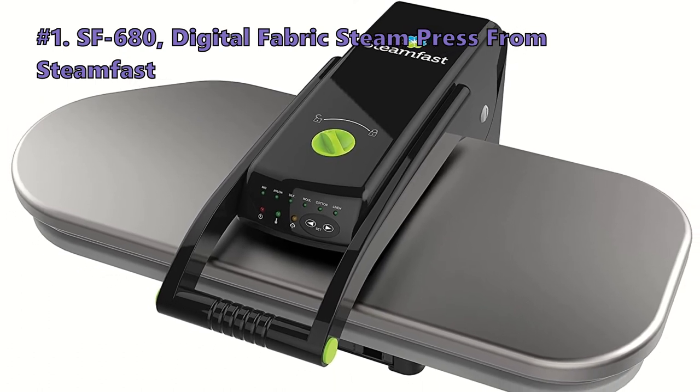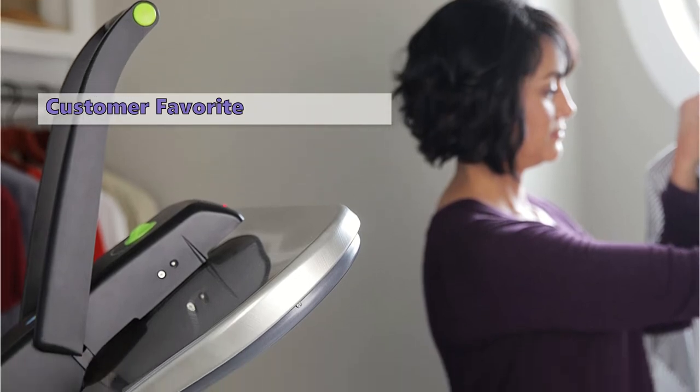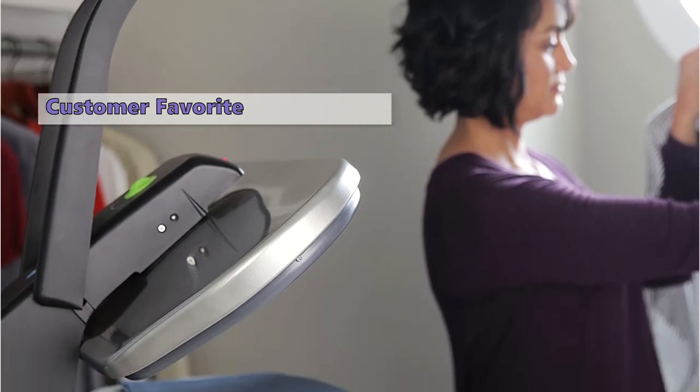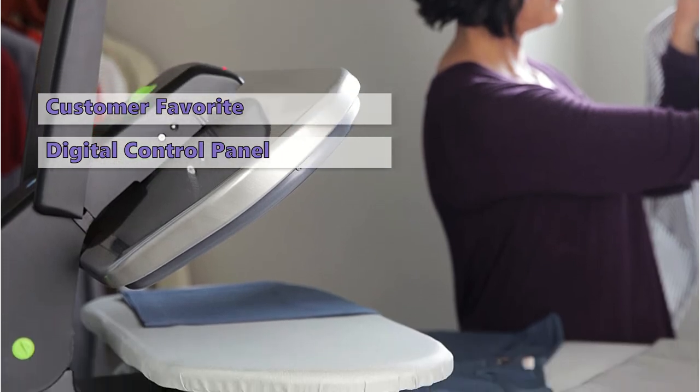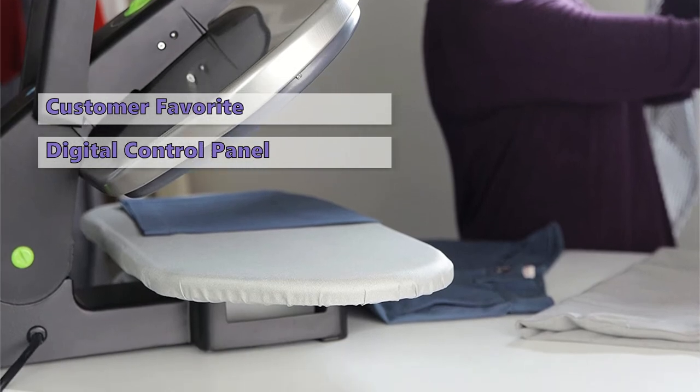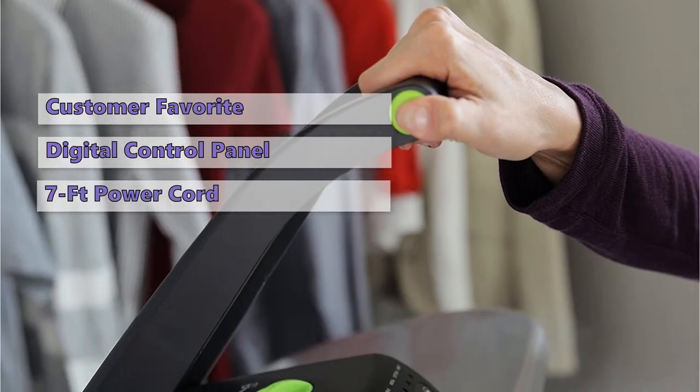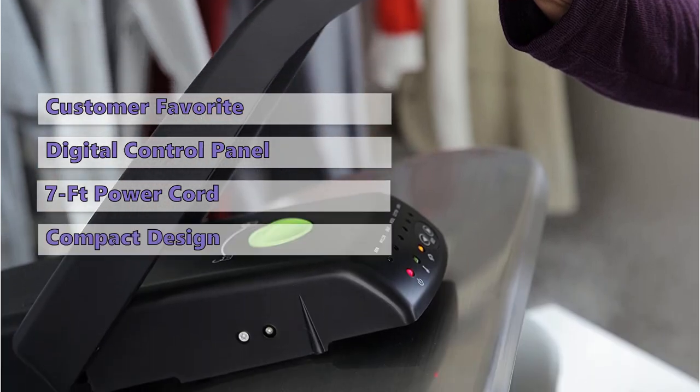If you want a professional look without the price tag, the Steamfast SF-680 is the steamer for you. This heavy-duty machine offers twice the surface area of other steamers, and it has a digital panel that automatically adjusts the temperature and steam bursts as necessary. It has a large 250 square inch Teflon plate for pressing clothes.